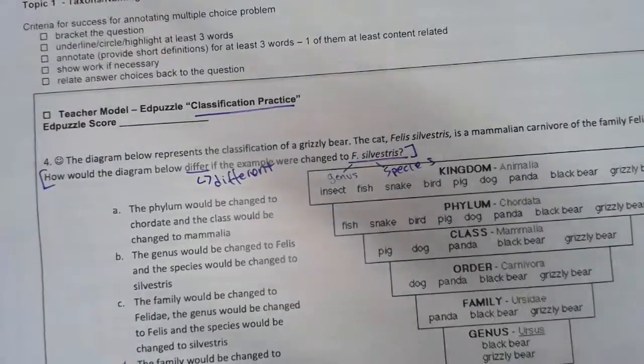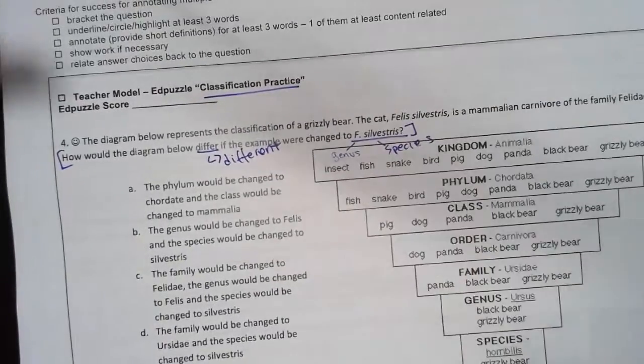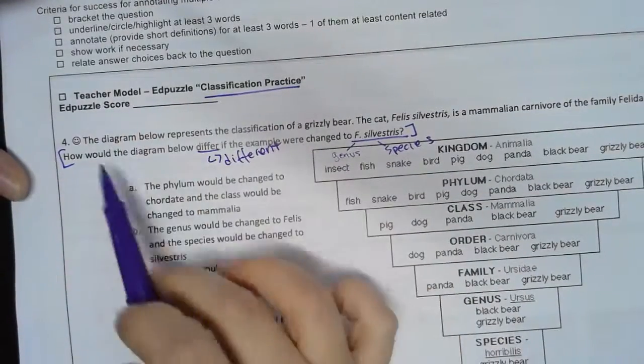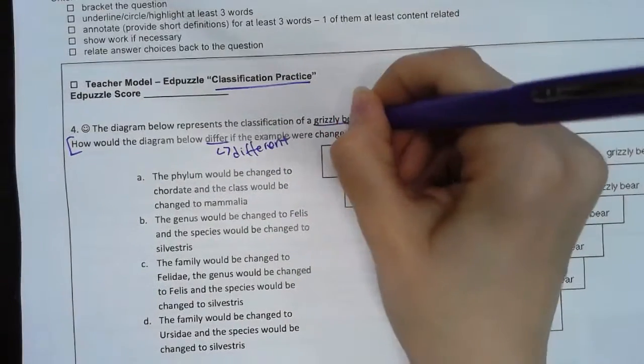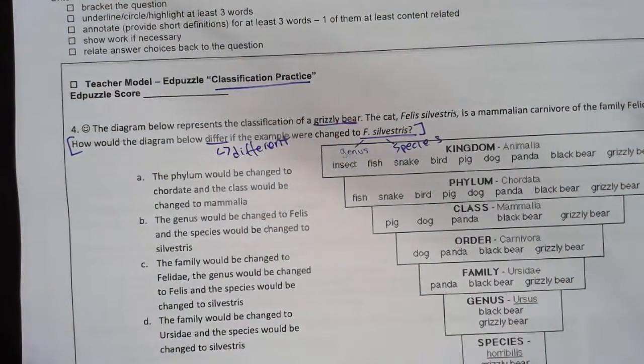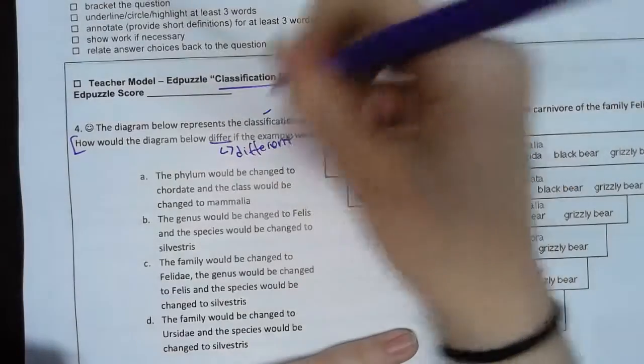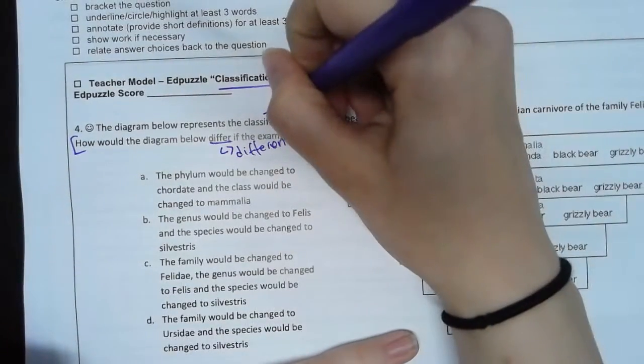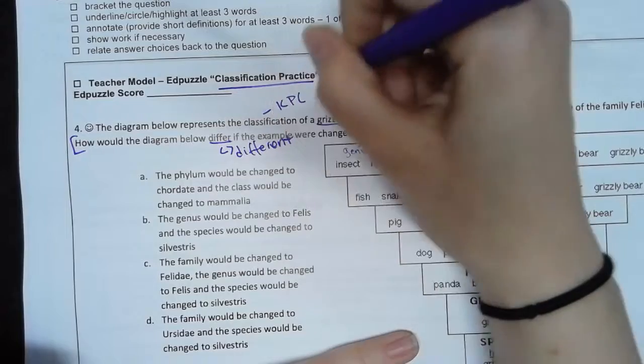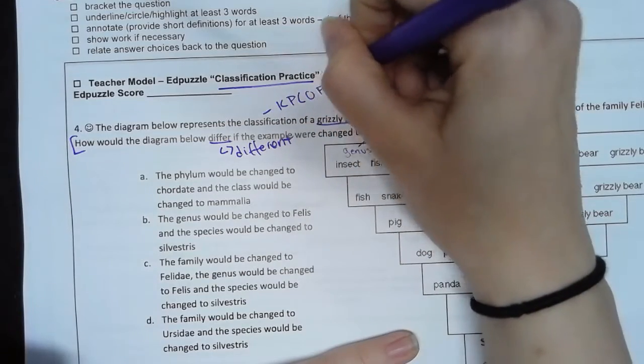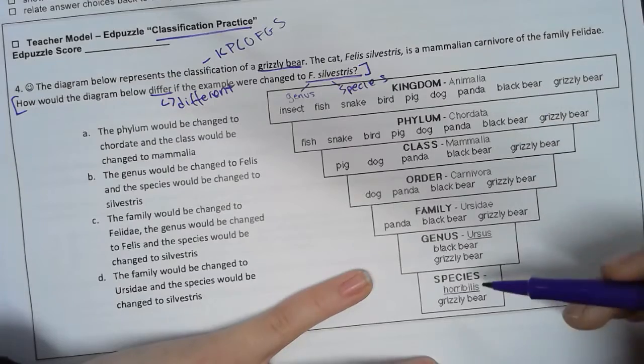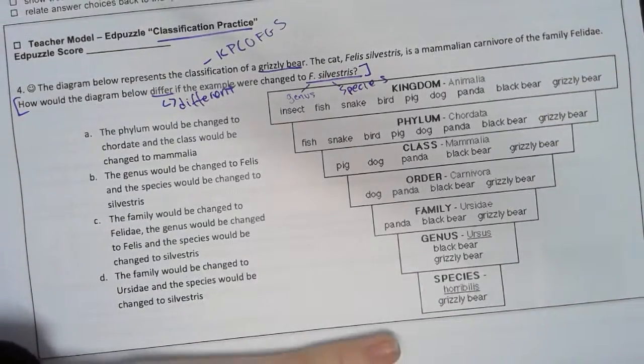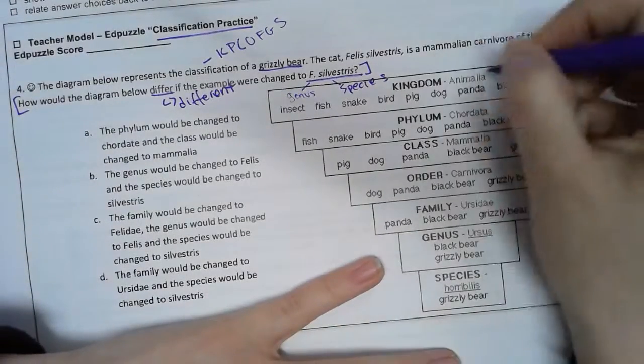That's helpful, but I don't really know what it's supposed to be different to, so I'm going to go back. The diagram below represents the classification of a grizzly bear. So classification means the whole 'Katy Perry Can Only Fart Good Songs' - kingdom, phylum, class, order, family, genus, species - that sort of thing, and it's just showing it in pyramid form.